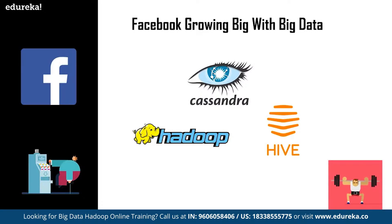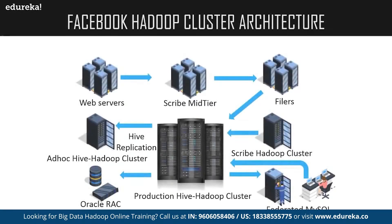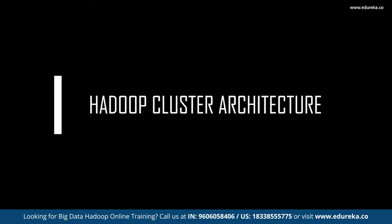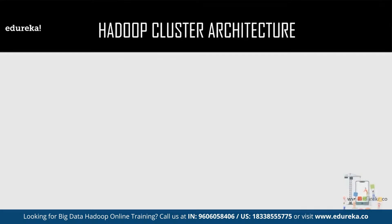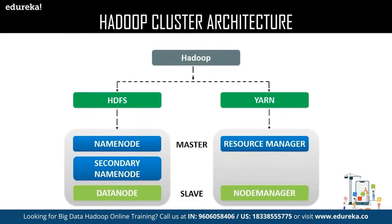Let us have an overview of Facebook's Hadoop cluster and then move on to the architecture of Hadoop cluster. This overview of Facebook's Hadoop cluster consists of web service, ad-hoc Hive Hadoop cluster, production Hive Hadoop cluster, and many more. Now that we have gone through a few facts on Facebook's Hadoop cluster, let us move on to the Hadoop architecture, which has the following components: HDFS and YARN.